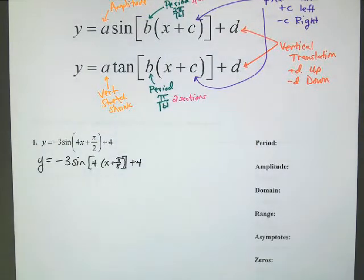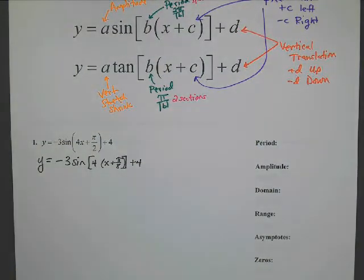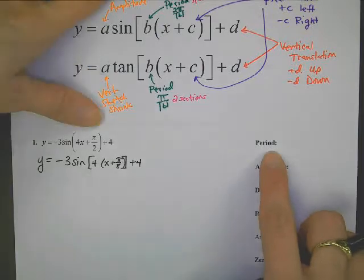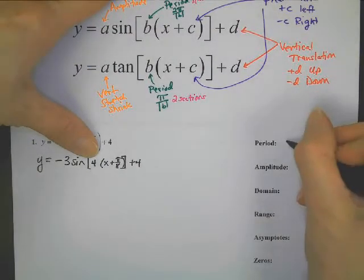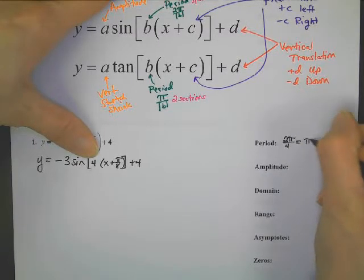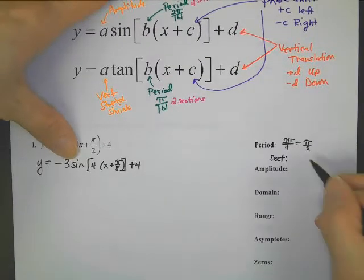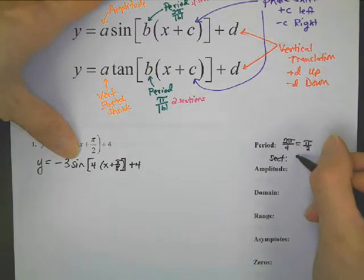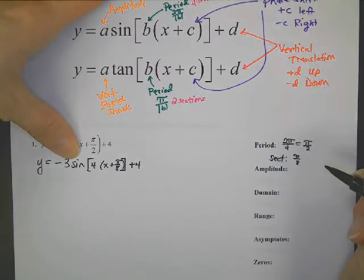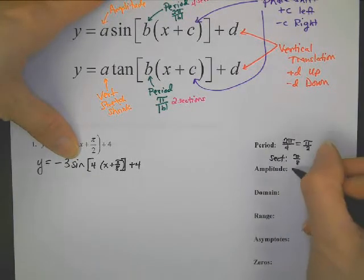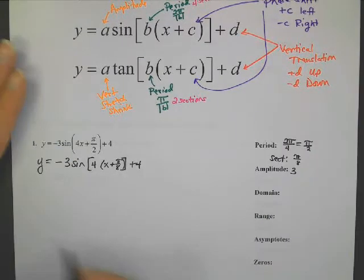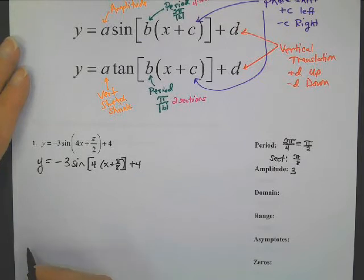When doing these, remember there are certain steps to follow. First, get the equation ready. Next, consider the period: since B is four, it's going to be 2π over 4, which is π over 2. A section for sine — divide that by four — is π over 8. The amplitude is three, so we are ready to get this graph started.